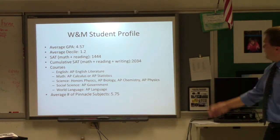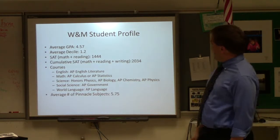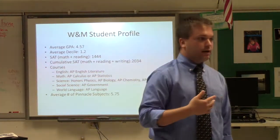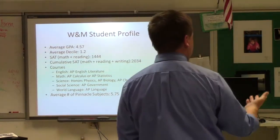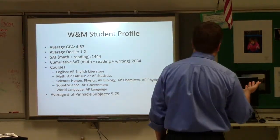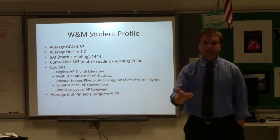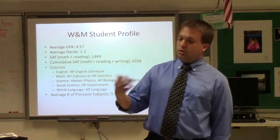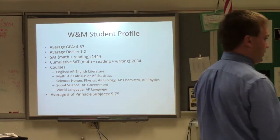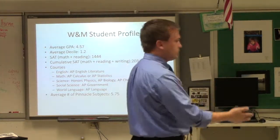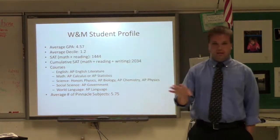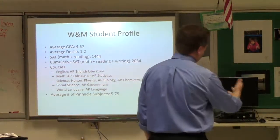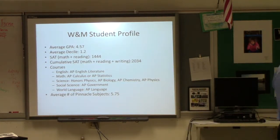The William & Mary student profile: 4.7 GPA, 1.2 decile, SAT math and reading of 1444. Historically we've suggested a 1250, but I think we need to adjust our expectations — I'm personally starting to recommend at least 1300. If William & Mary is your top choice and you'd go there no matter what, I do encourage early decision. Their admissions officer told us their pool is smaller so there's less competition in the early decision pool, though we don't track early versus regular decision definitively.